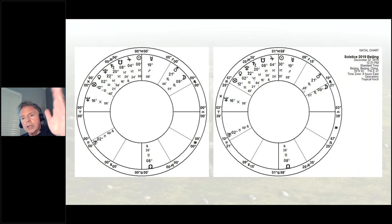...that at the moment of the solstice, at least Beijing time which was 12:21 PM on the 22nd there because they're 13 hours ahead of the East Coast, the Sun happened to be within less than two degrees from the Midheaven. And I looked around to see if there were any other cities where the Sun was that close to the Midheaven at the moment of the solstice, and there weren't.